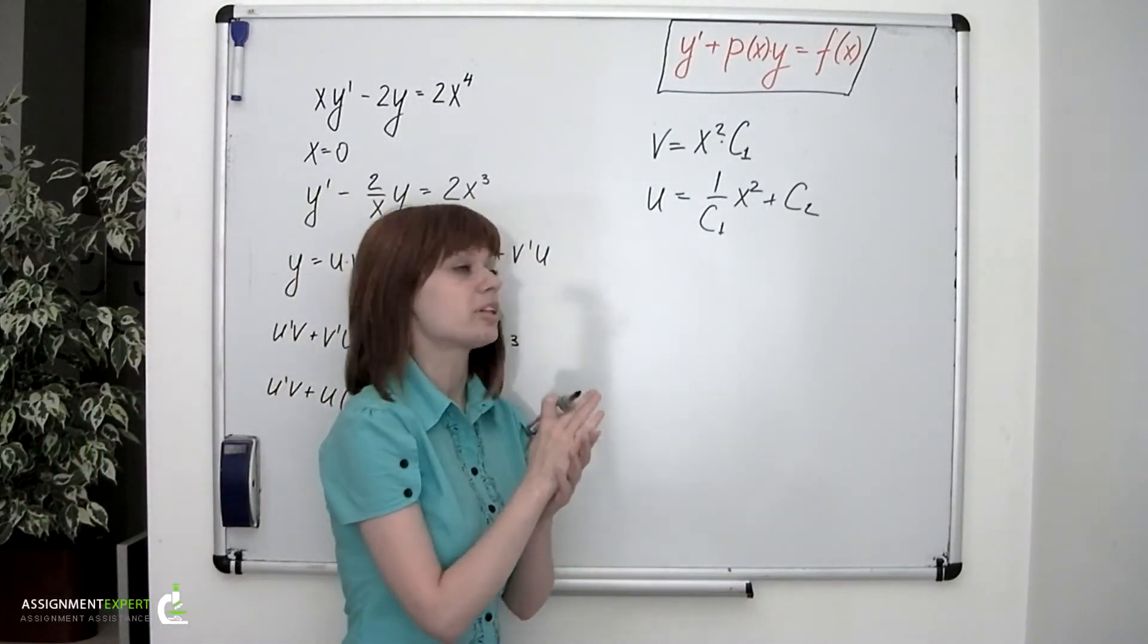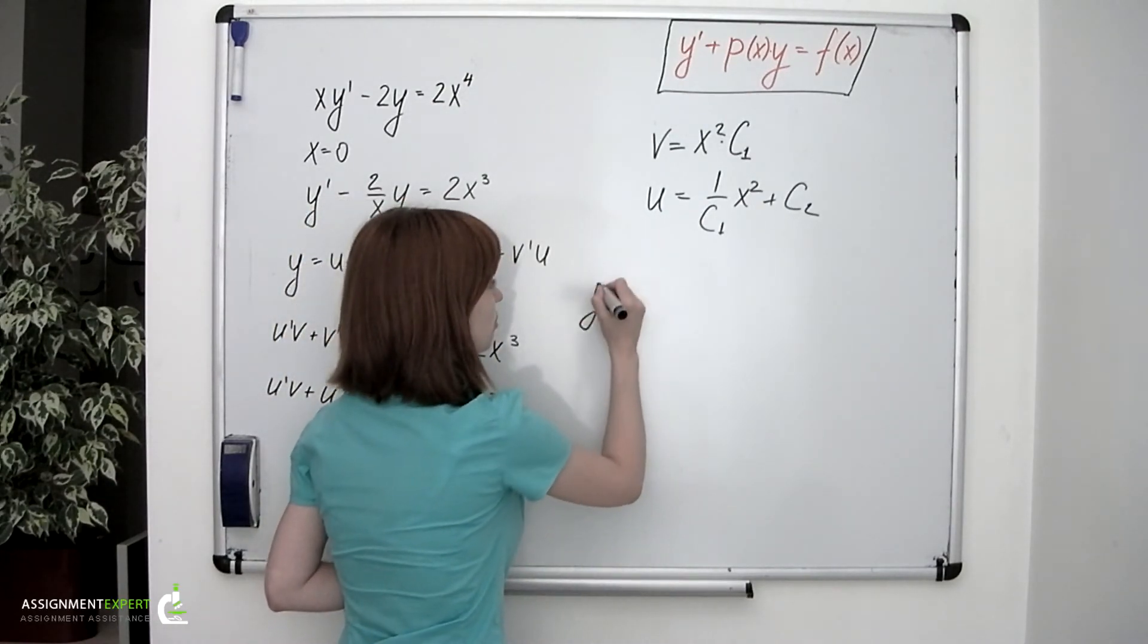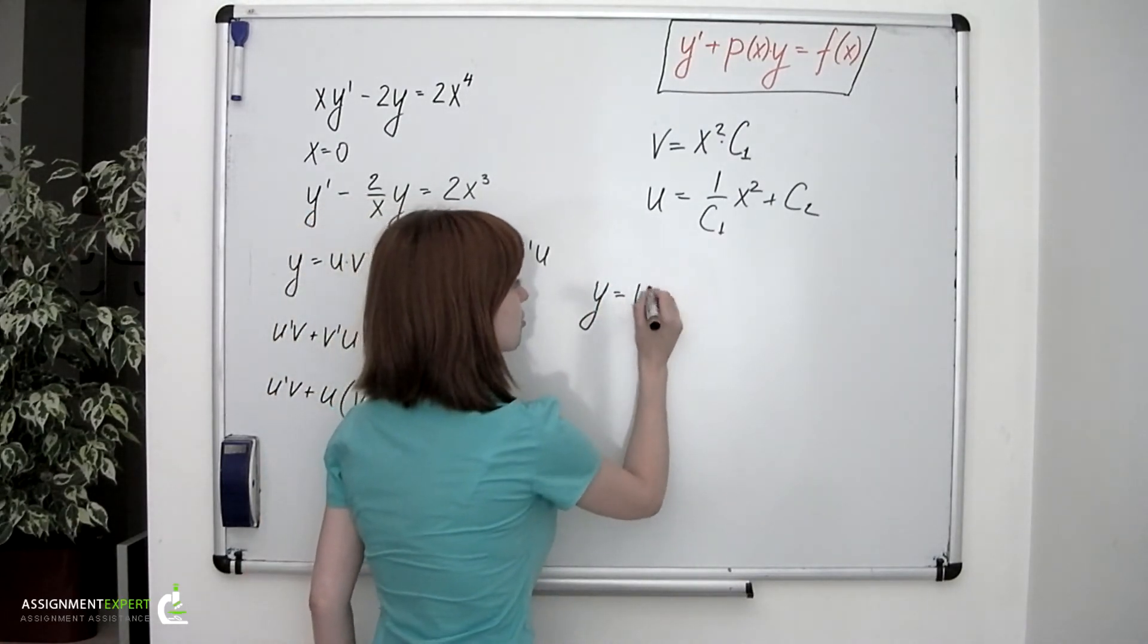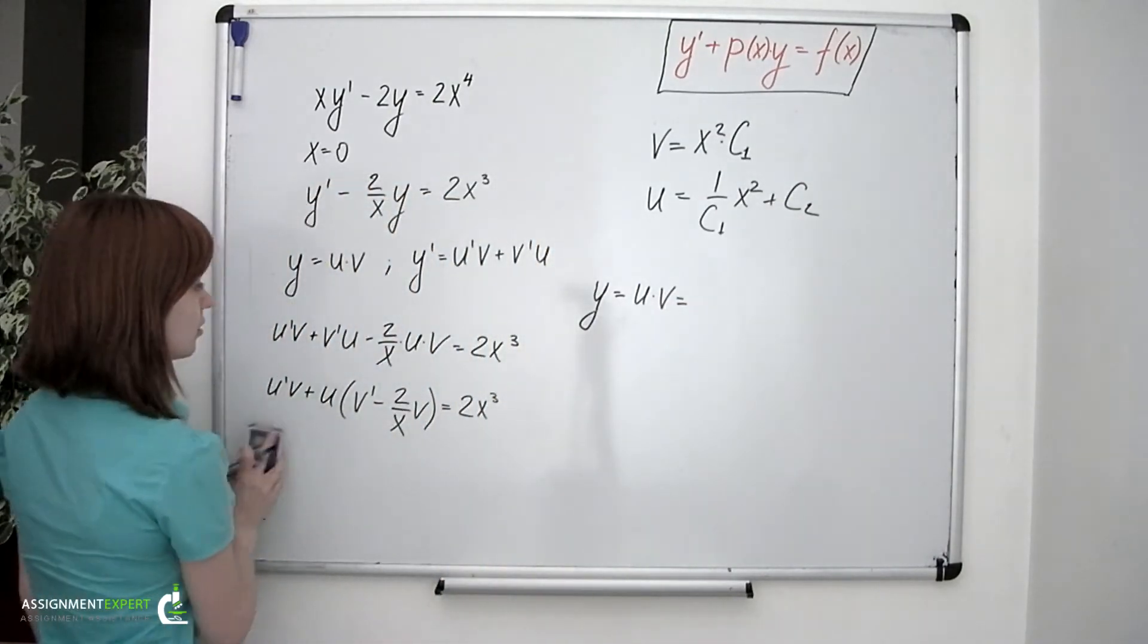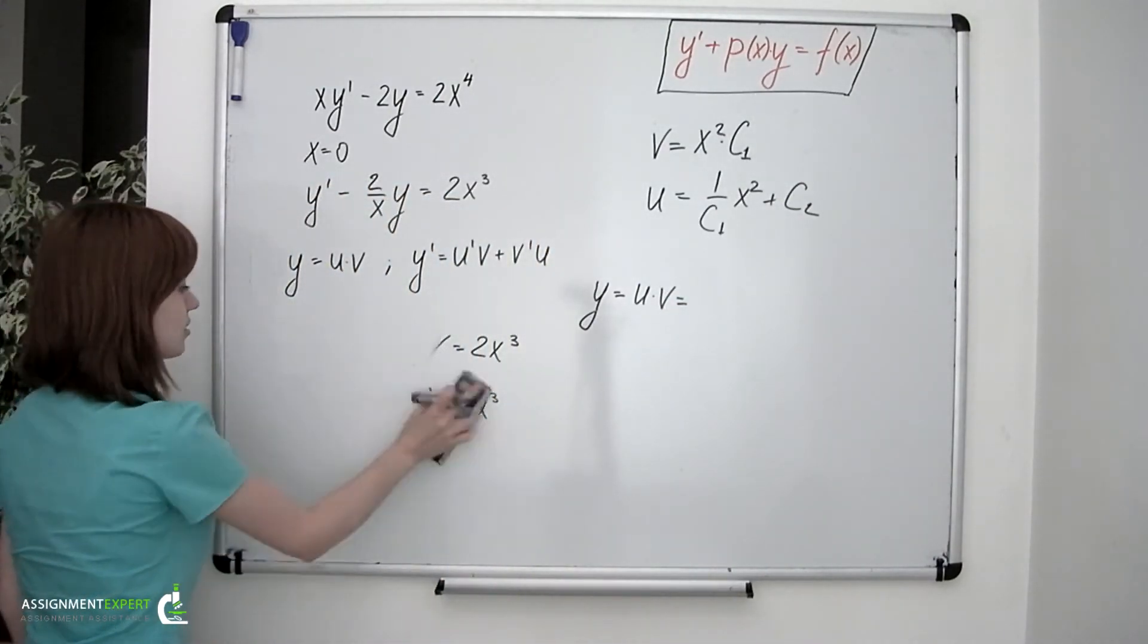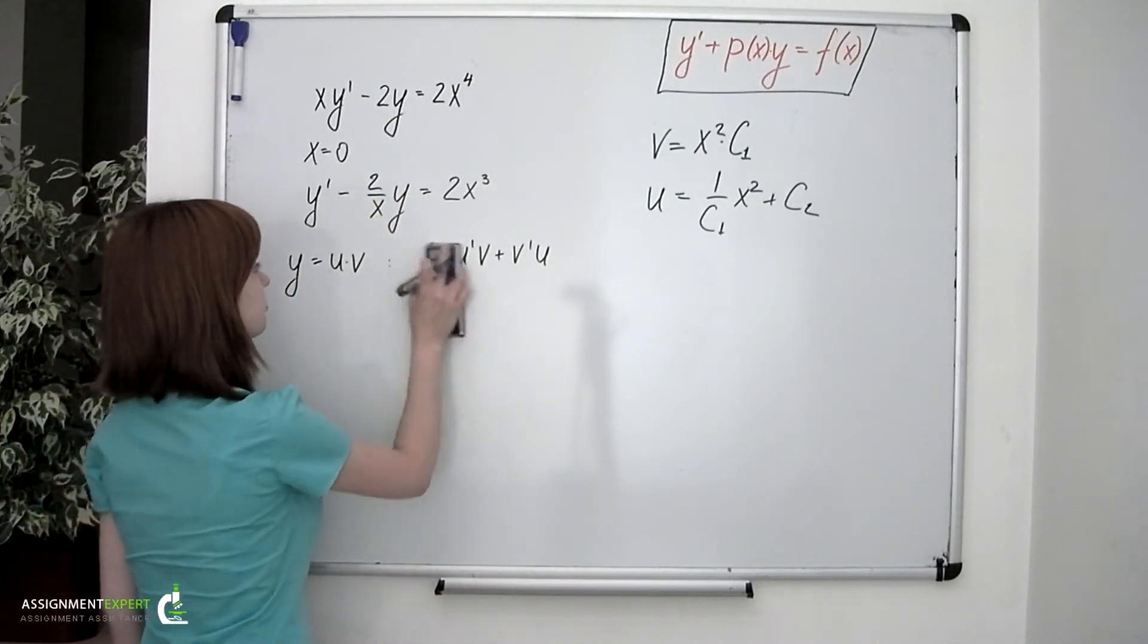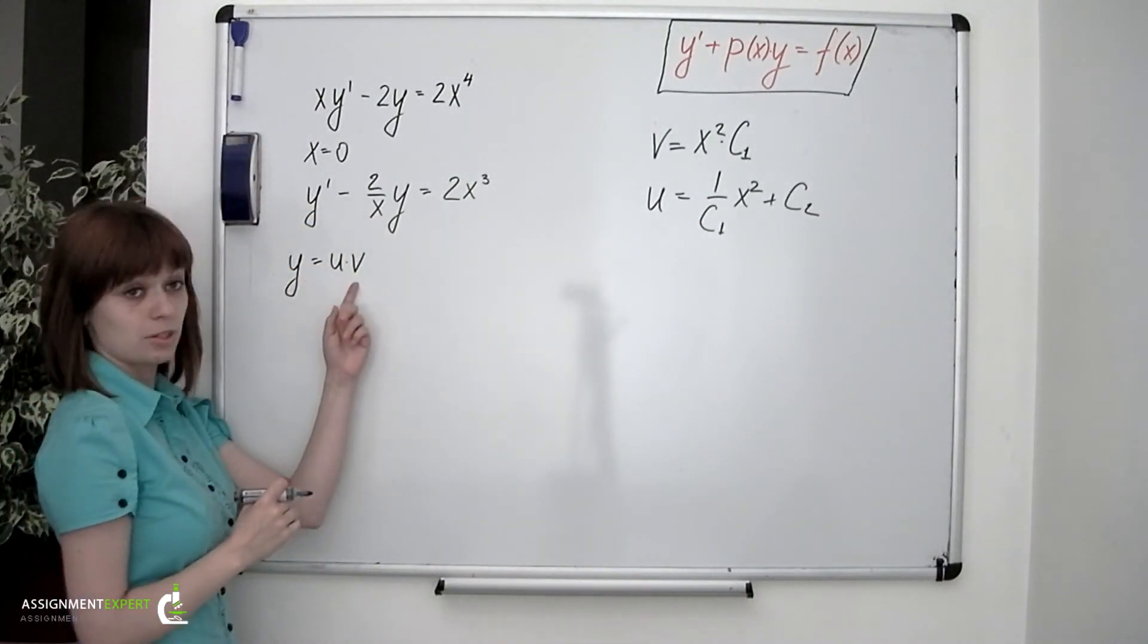And the last thing we'll have to do is simply to multiply these two functions in order to return to the y function. So we have y equals u times v, or let me write it somewhere in the left corner.